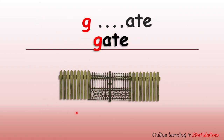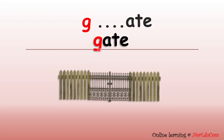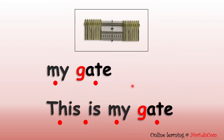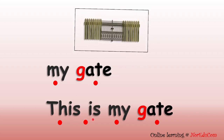Now, can you name this picture? Yes, this is a gate. G, g, gate. G, g, gate. Let's read: My gate. This is my gate. Let's read it again. My gate. This is my gate. Very good.